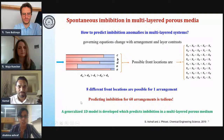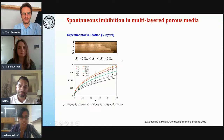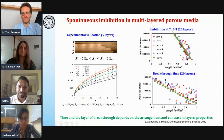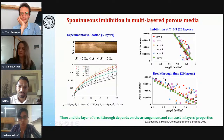We went ahead and generalized the one-dimensional model so that it is able to predict the imbibition irrespective of the arrangement, irrespective of the contrast in the layer properties, and irrespective of the number of layers. Using this generalized one-dimensional model, we show experimental validation for a five-layered system — and yes, the generalized model predicts very well. We then used the one-dimensional model to analyze 20 layers, for which there are about 10^18 cases possible. Out of these, showing six arrangements: at one particular dimensionless time of 0.5, the front positions are different for different arrangements, and the breakthrough times are also different for each arrangement.